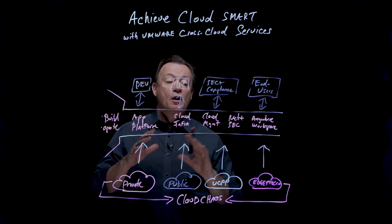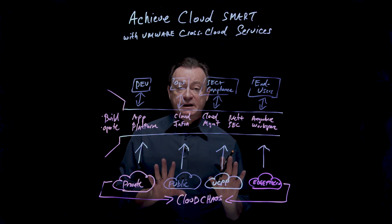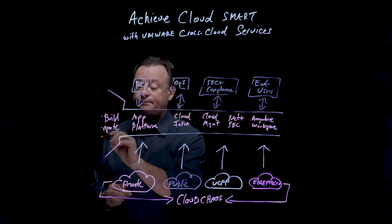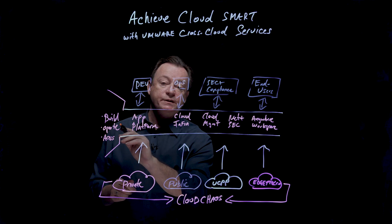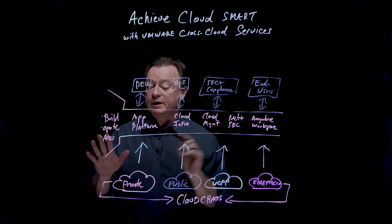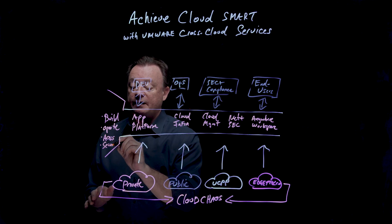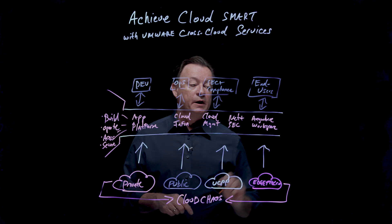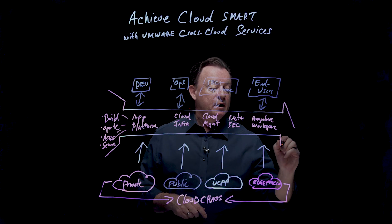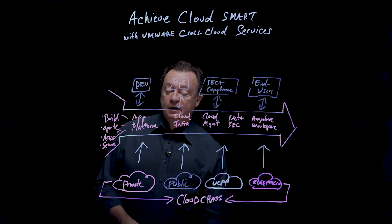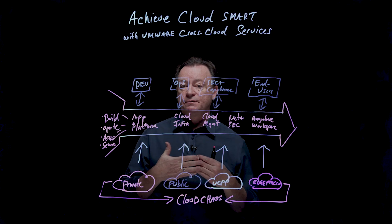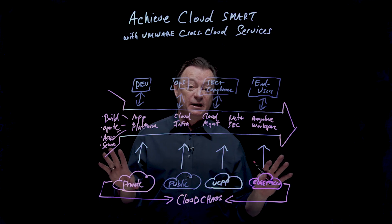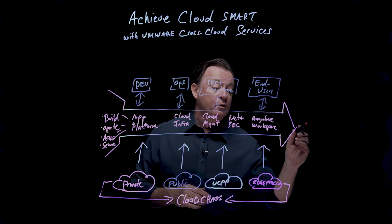We can operate applications as they are running — the various applications and data no matter where they are — operating security and compliance from any device. We've got our access points secured as we come in, and our security layer is consistent across the cloud landscape. So if all these individuals have access to services within this abstraction layer to build, operate, and securely access their applications and data consistently across any cloud, you're on the right path to CloudSmart.